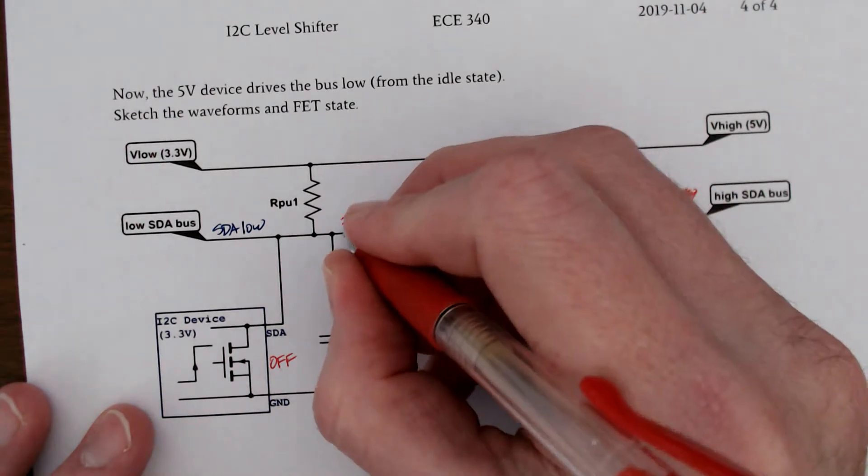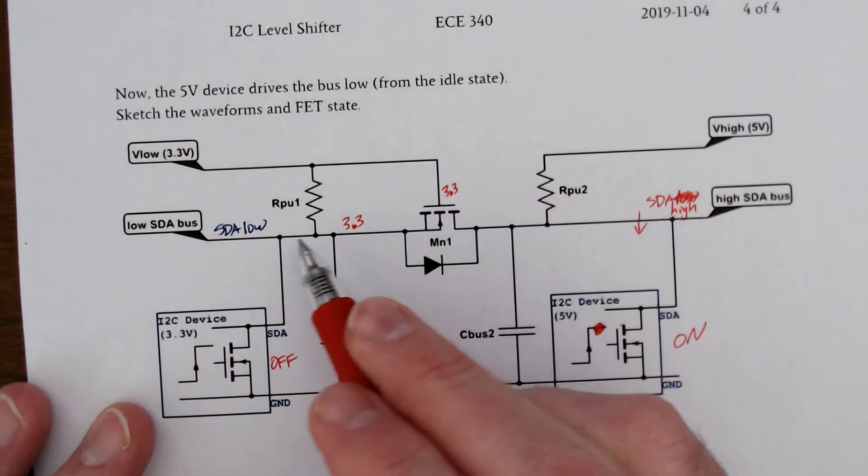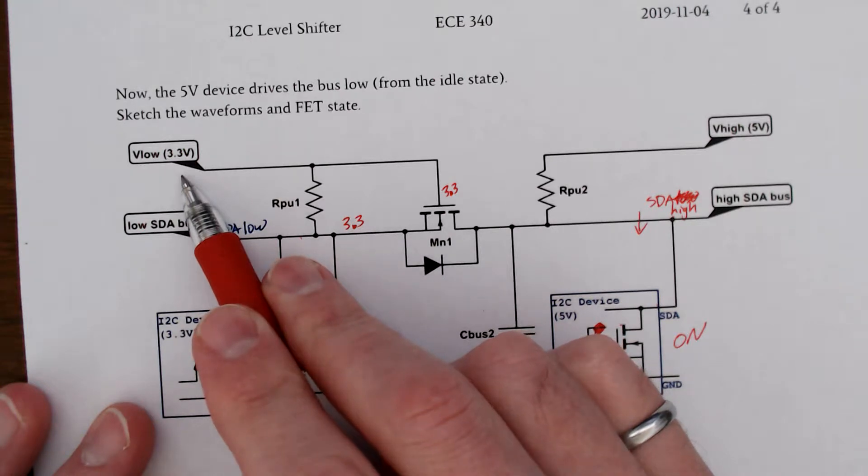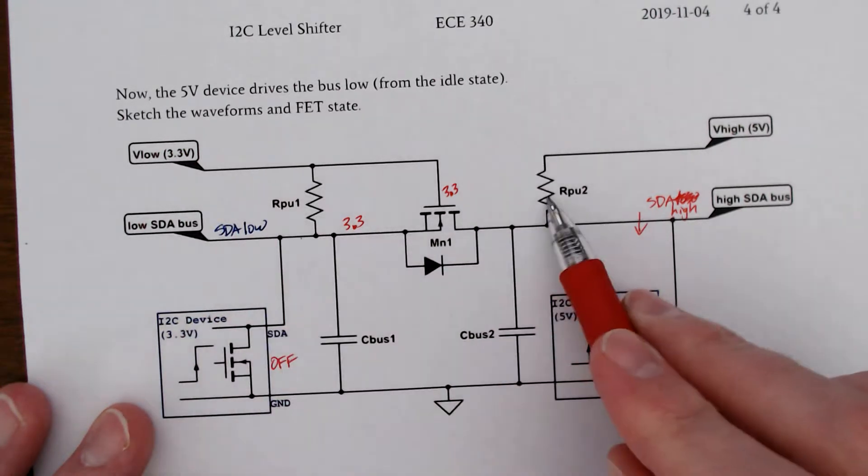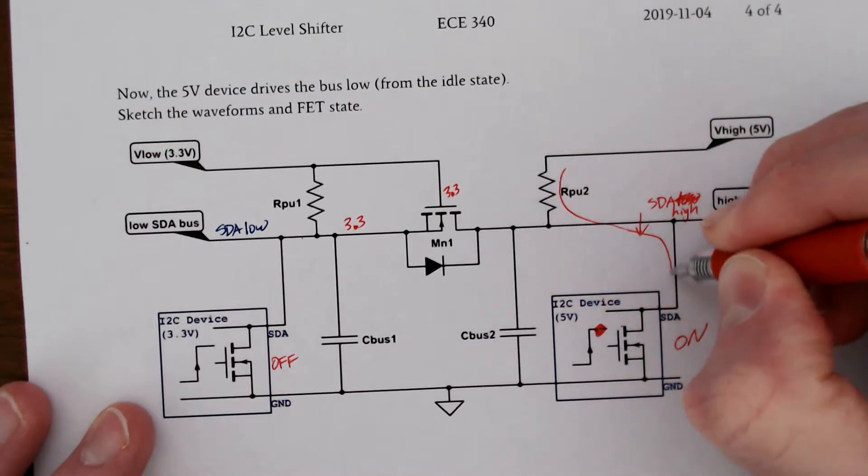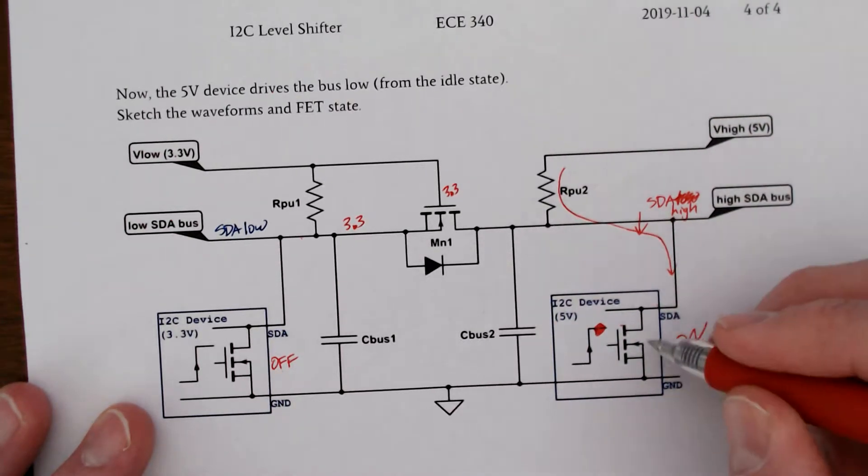Its initial condition was 3.3 volts, because it was pulled all the way up with this RPU1, pull-up 1. Our pull-up 2, we will have, of course, current flowing this way through our on MOSFET.